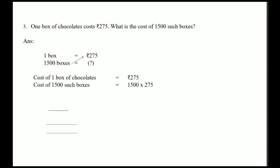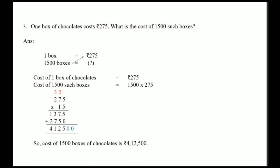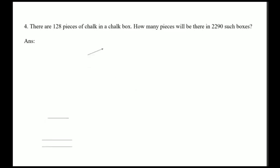So I have multiplied 275 by 15 and added the two zeros at the end. My final answer is 4 lakh 12,500. So the cost of 1500 boxes of chocolate is 4 lakh 12,500. Sum number four: there are 128 pieces of chalk in a chalk box. How many pieces will there be in 2290 such boxes?